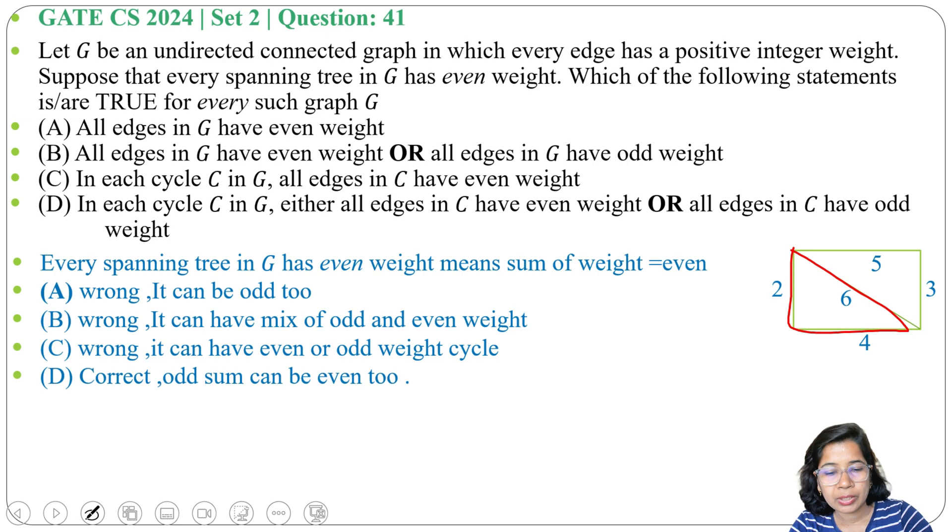So let's take another example. Like here let 2, 4, 6. Here 1, 3. So this spanning tree you can consider like this: 1 plus 3 is 4, then 4 plus 2. So in this cycle all edges are even. You can also consider all edges of the cycle are odd.